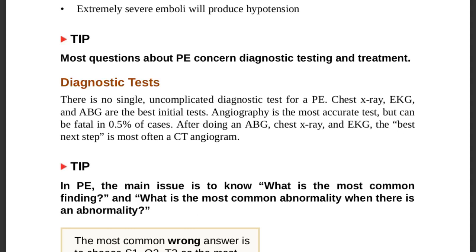Remember the terminology: best initial tests are chest x-ray, ECG, and ABGs; most accurate is angiography; and best next step after initial tests is CT angiogram (spiral CT). The specificity of CT angiogram is excellent at over 95 percent, and sensitivity for clinically significant clots is 95 to 98 percent.